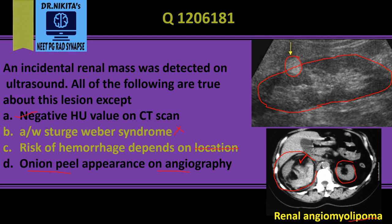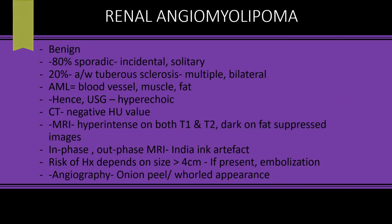On angiography, angiomyolipoma has an onion peel or whorl appearance because of the myo component — just like a myoma or fibroid in the uterus, which also has a whorl appearance. Even angiomyolipoma has this onion peel or whorl appearance on angiography.